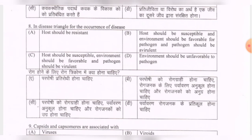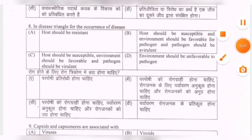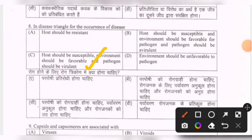Next question: in the disease triangle, for the occurrence of disease — options include host should be resistant, host should be susceptible and environment should be favorable and pathogen should be virulent, or environment should be favorable to pathogen. The correct option is C — host should be susceptible, environment favorable, and pathogen virulent.